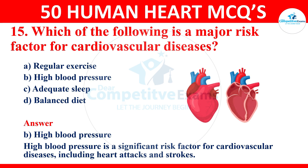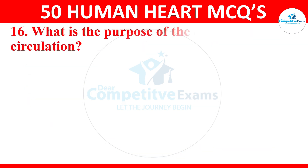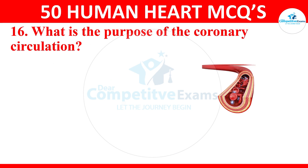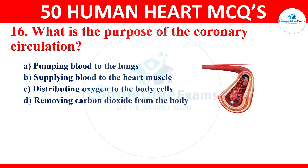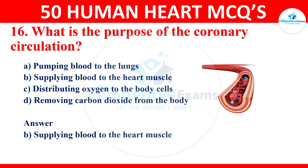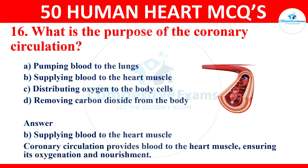Question 16: what is the purpose of coronary circulation? Options are pumping blood to the lungs, supplying blood to the heart muscle, distributing oxygen to the body cells, or removing carbon dioxide from the body. The correct answer is supplying blood to the heart muscle. Coronary circulation provides blood to the heart, ensuring its oxygenation and nourishment.